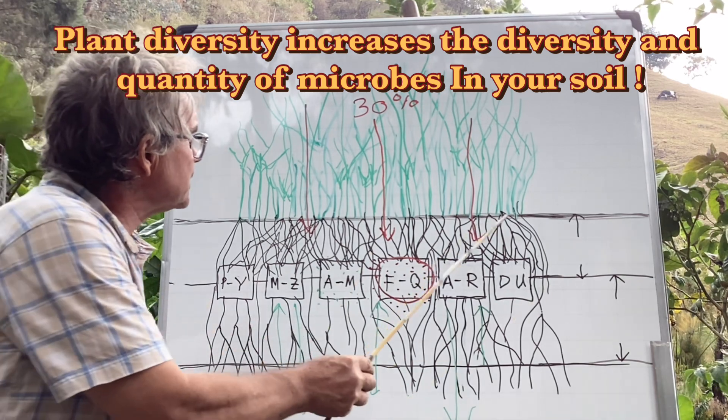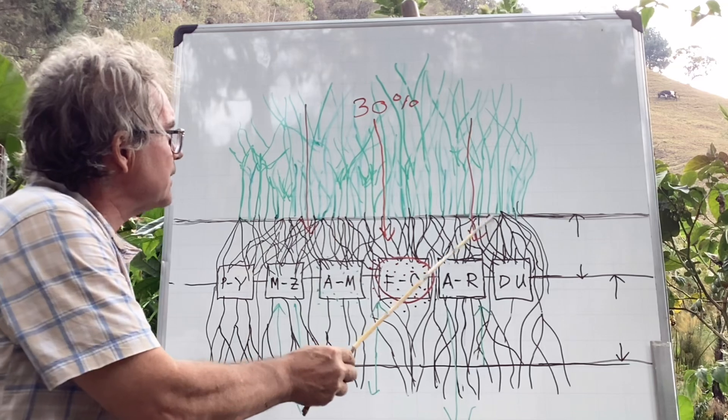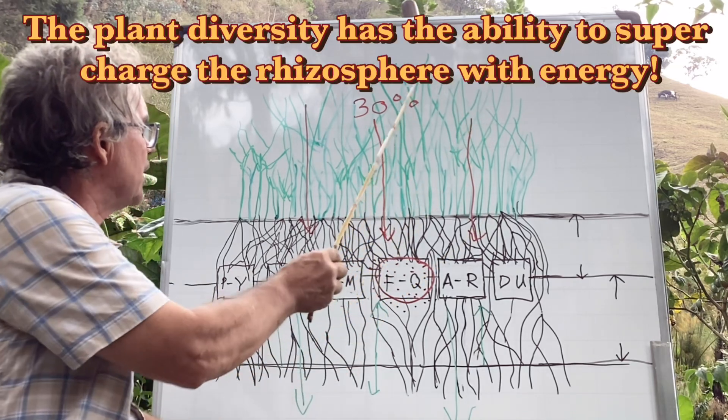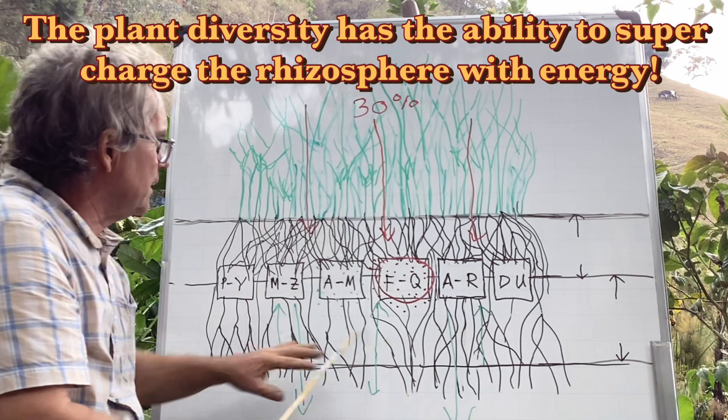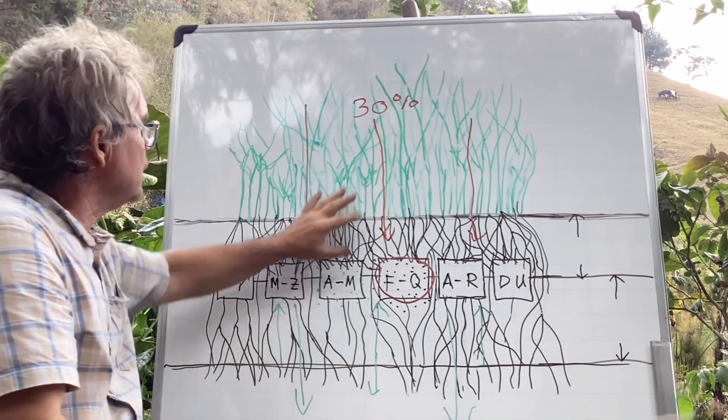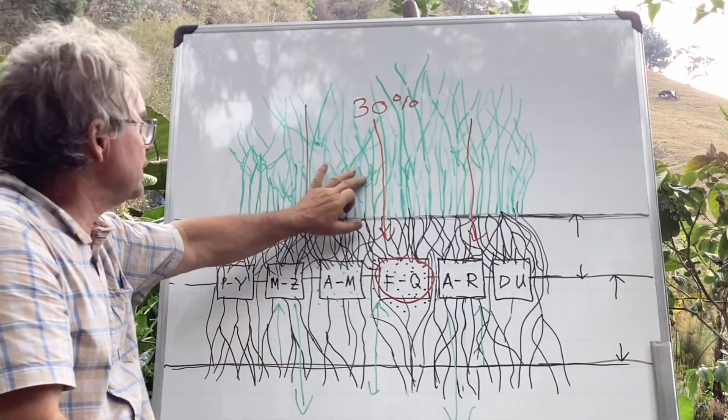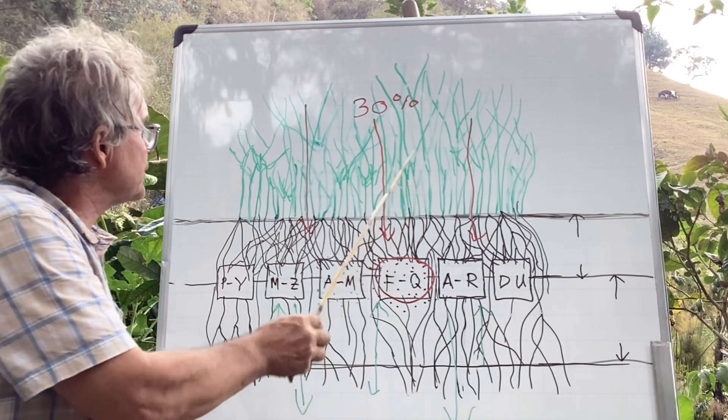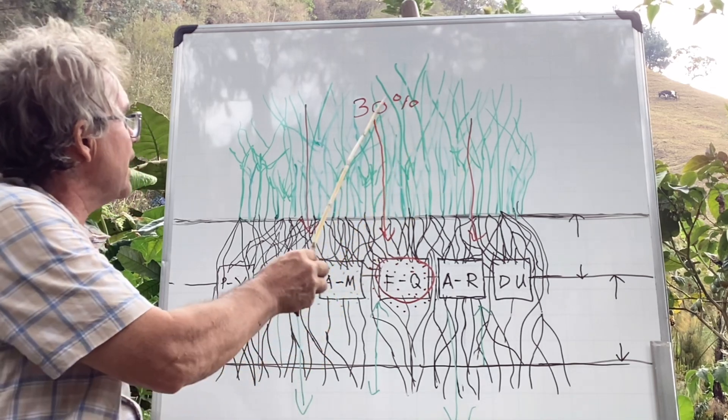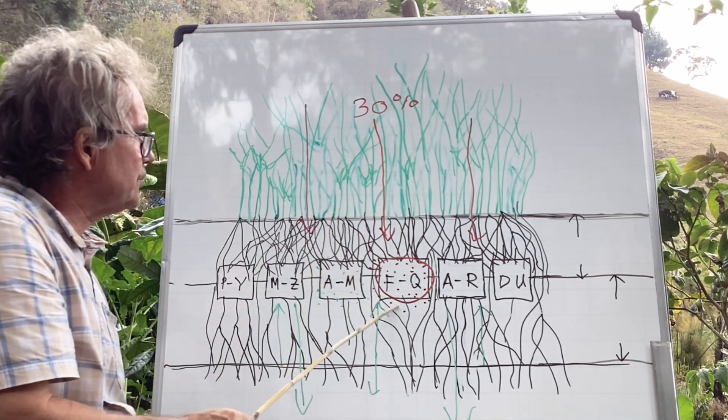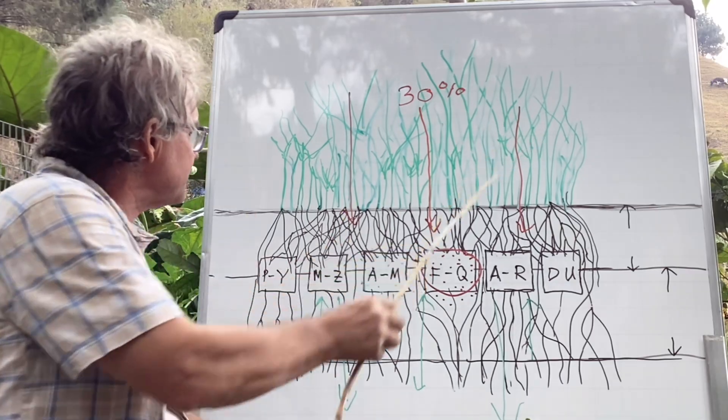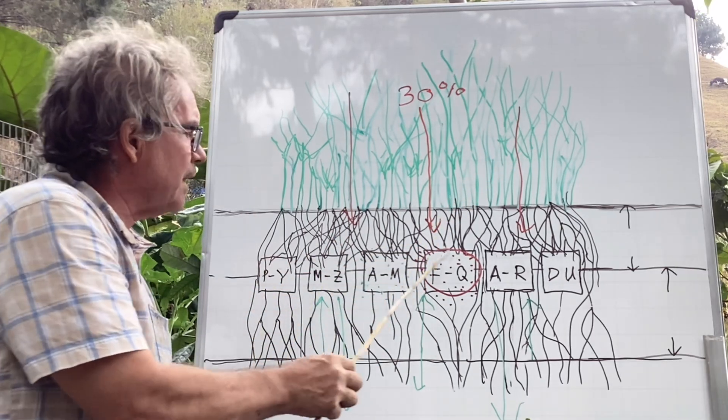So what happens is the seeds germinate. They'll send out the vegetation up. The sun photosynthesis and the energy that's in the soil will make these grow beautifully. They get to a certain stage where they will send energy back into the ground. And these diverse plants will send back diverse energy.